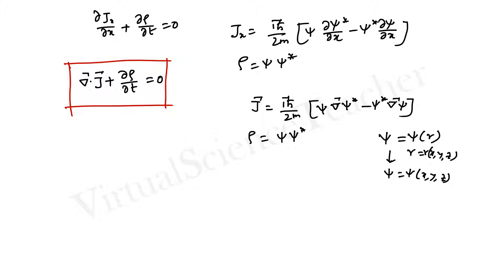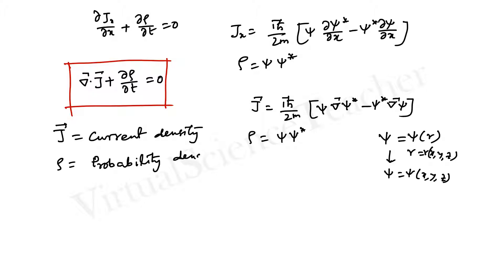Here, j is called the current density and ρ is known as the probability density. If we have a wave function ψ, multiplying by its complex conjugate ψ* gives the probability density. Once we find the probability density, we can easily find the total probability of the system by integration. The continuity equation is: ∇·j + ∂ρ/∂t = 0.